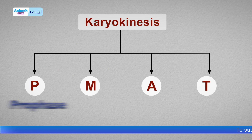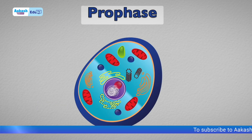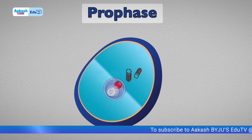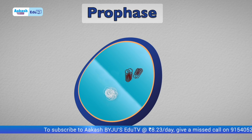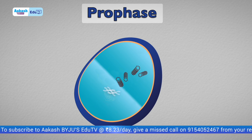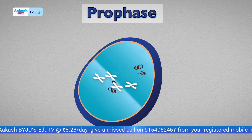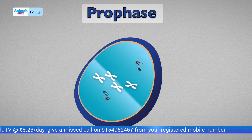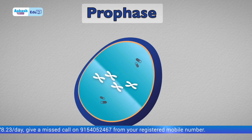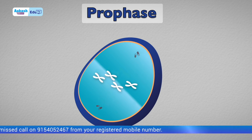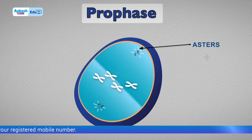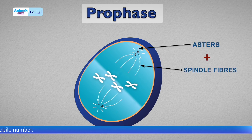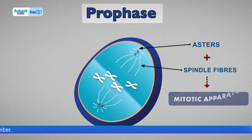The first stage is prophase. Here, organelles, the nuclear membrane, and nucleolus all disappear, and the chromatin material condenses to become chromosomes. Also, duplicate centrosomes move to opposite poles, and these centrosomes radiate spindle fibers together to form the mitotic apparatus.